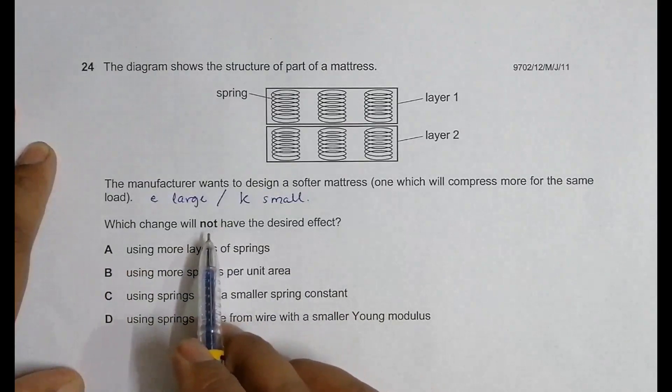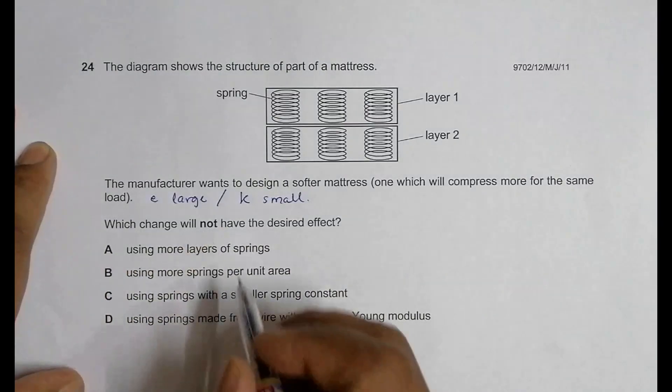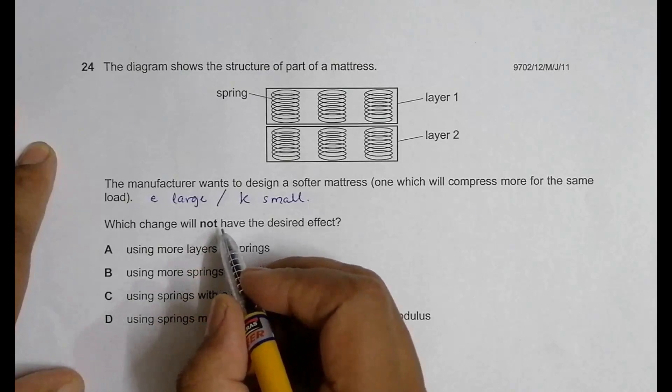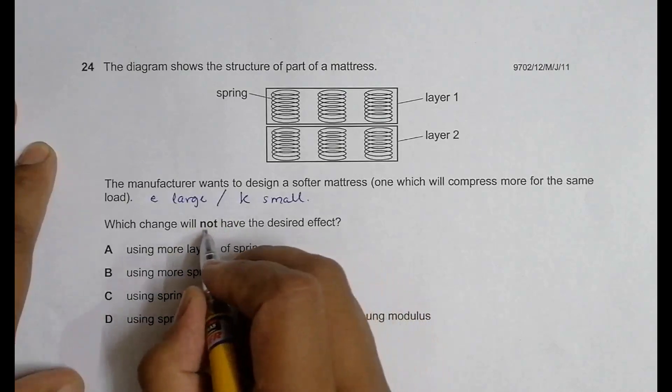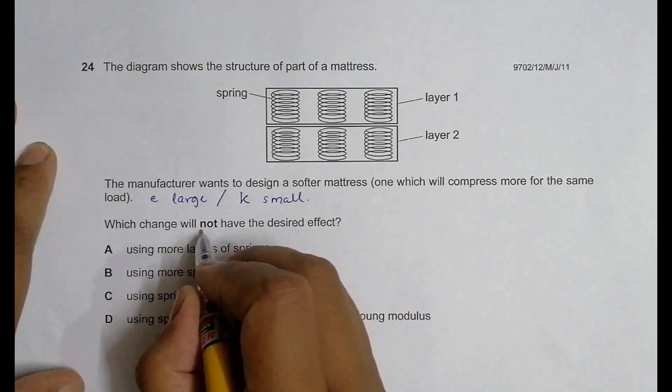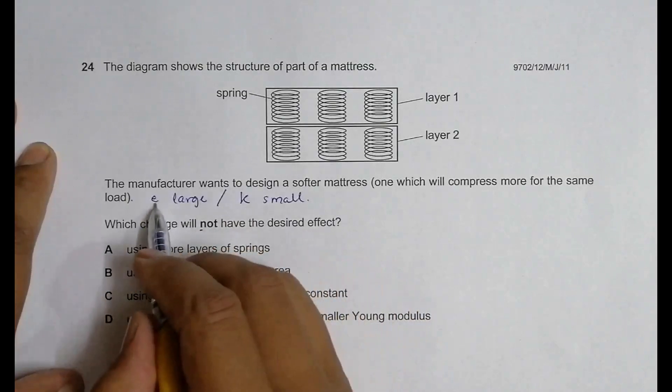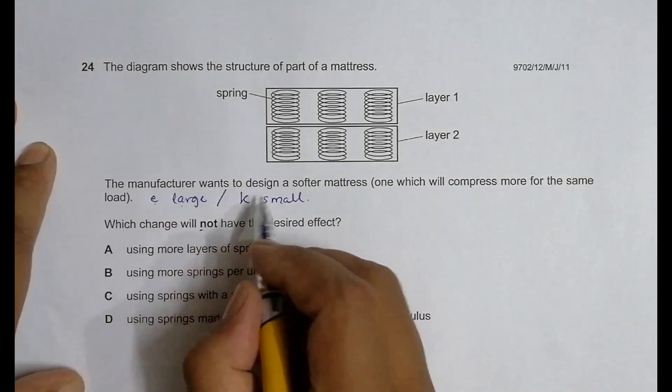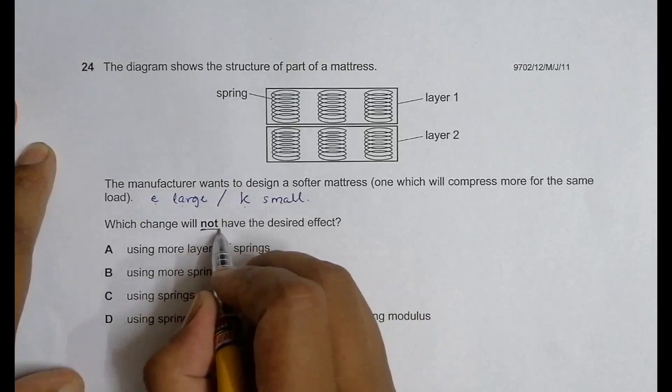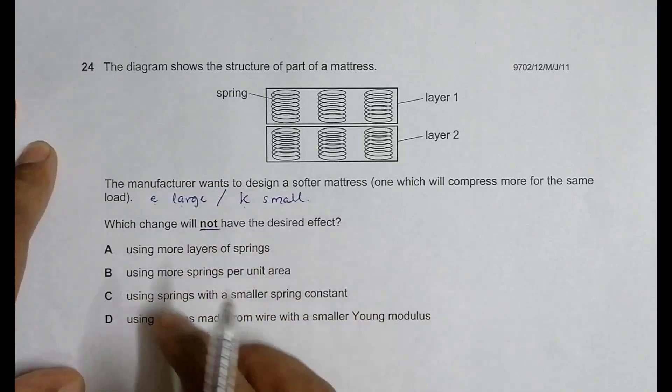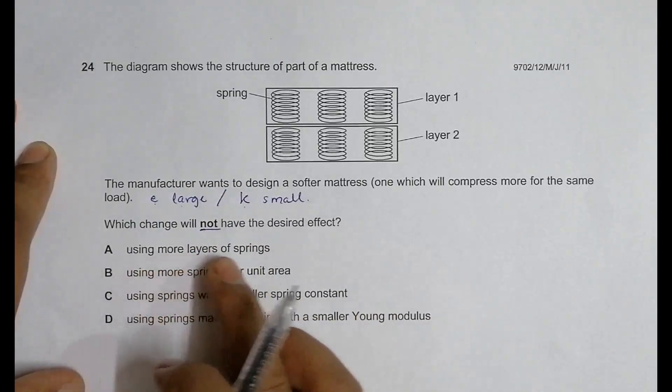Which change will not have the desired effect? We have to find the answer to this negative question, and these questions are always very confusing. It asks which change will not have the result, meaning E should not be large and k should not be small.